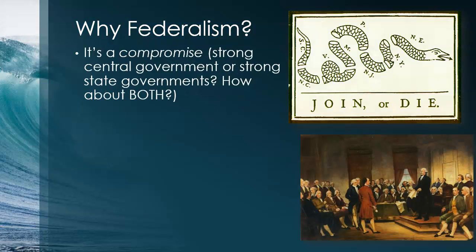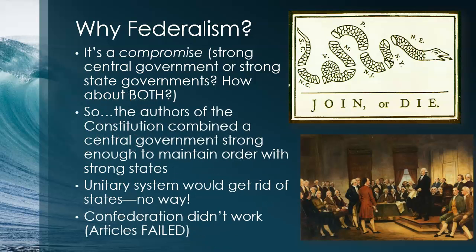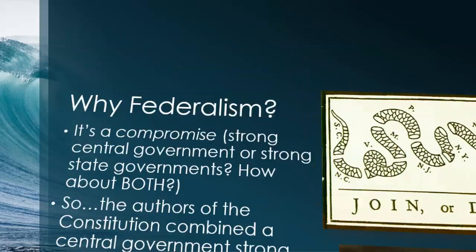Why did they create federalism? During the Constitutional Convention there were all of these compromises. One of them was: how big and strong do we make the federal government, or how strong do we keep the states? People were arguing back and forth, and eventually they realized maybe we can have both — strong state governments and a strong central government as well. That satisfied both the federalists and some of the anti-federalists. They combined a central government strong enough to maintain order with strong states that can maintain order within their own states.